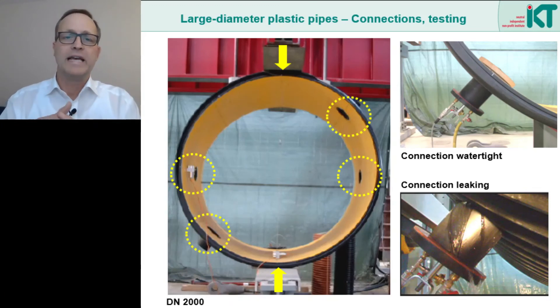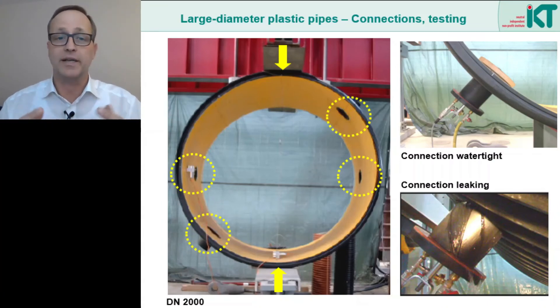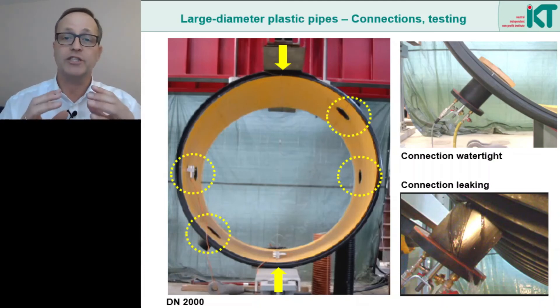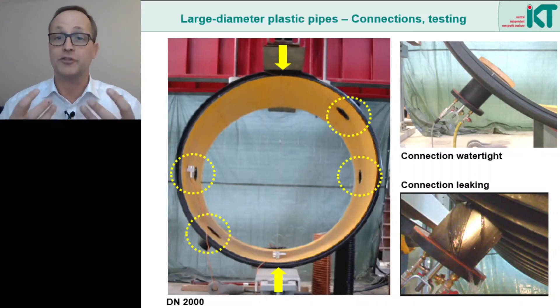However, deformations can also have other effects, especially on connections. Not all connection systems react robustly when the main sewer pipe deforms. Here we see an example from our tests. If the large pipe deforms, then in areas with large changes in curvature, the connections can also be strongly deformed and strained. This, of course, can become a problem for the tightness of the connections. Connections must be designed for such deformations and strains.